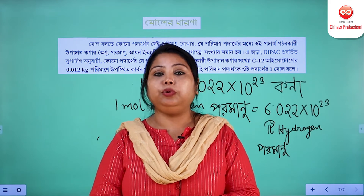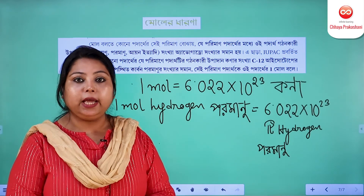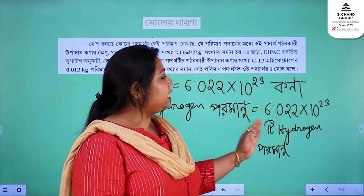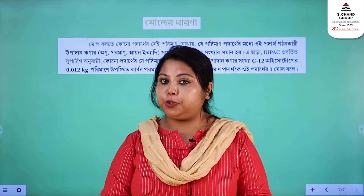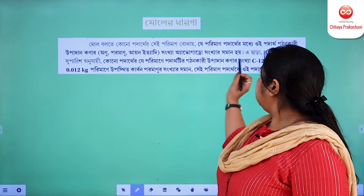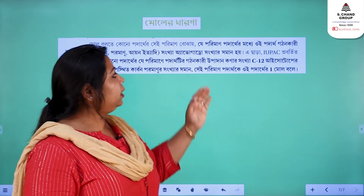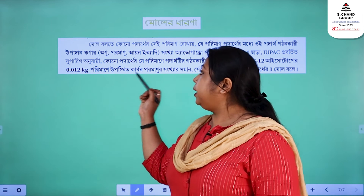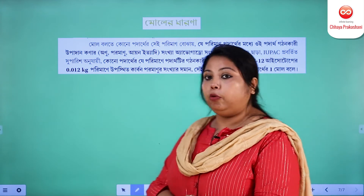Mole is an SI unit. If you have 1 mole of hydrogen atoms, then I can say that we have 6.022 × 10²³ hydrogen atoms. The quantity of substance that you always see in books — that amount of substance we call 1 mole.